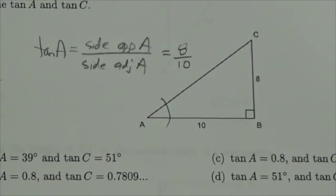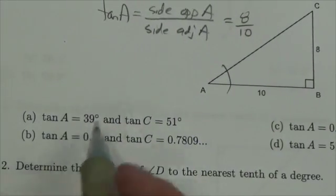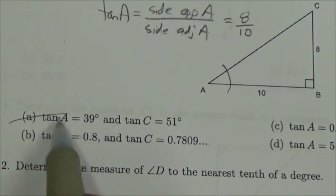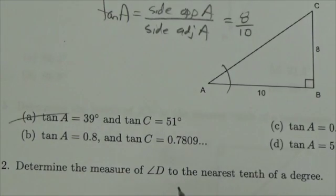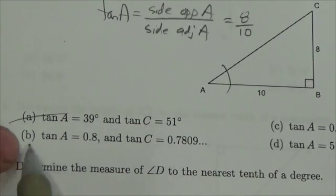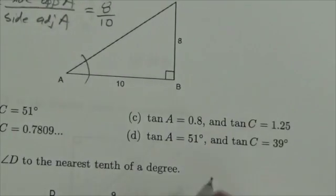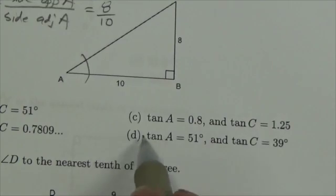Now notice this question is not asking us to find the angle, just the tangent of A. When I look at answer A, it can't be right because that's trying to give me what the angles are. The tangent of A cannot be equal to a degree, it's got to be equal to a ratio. But I can see it could be B or C, where 8/10 equals 0.8. It can't be D because again we're throwing angles in there.